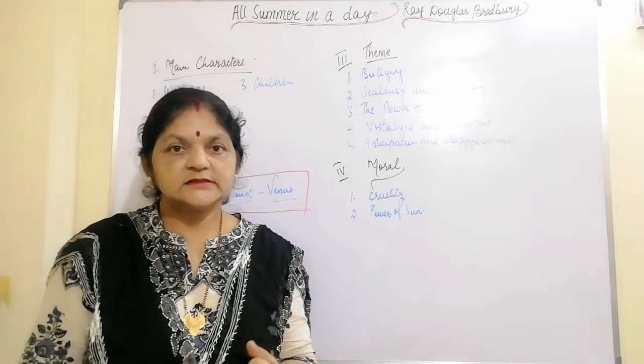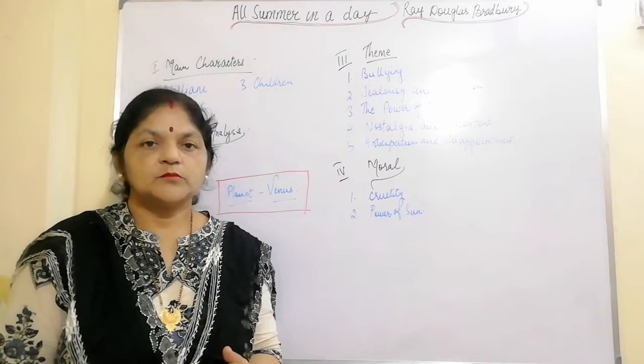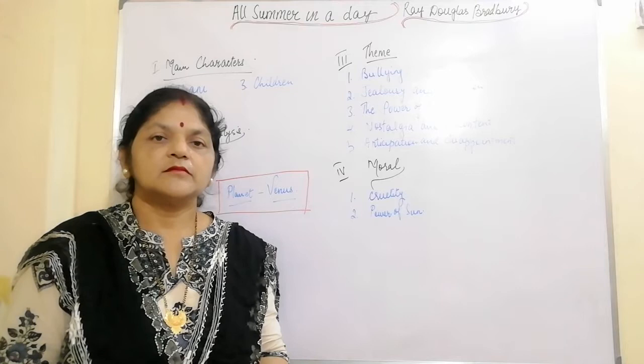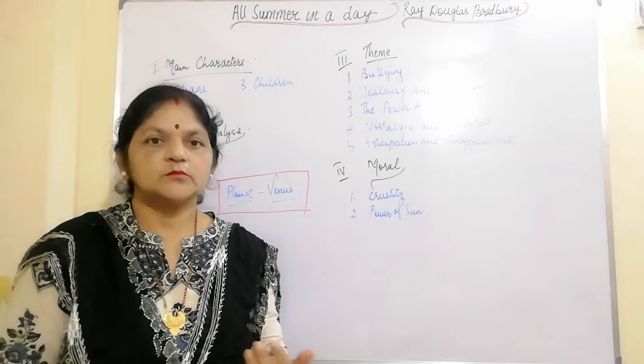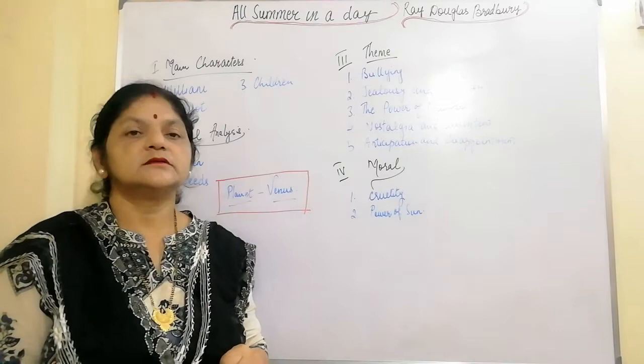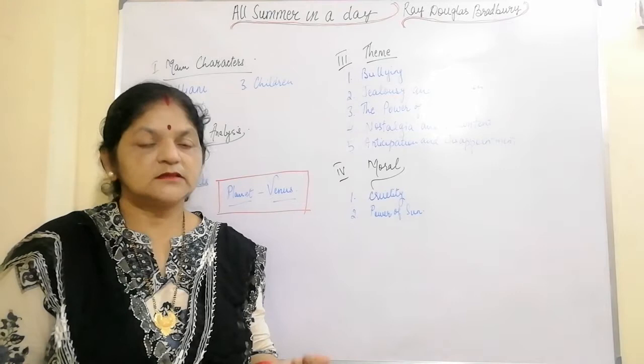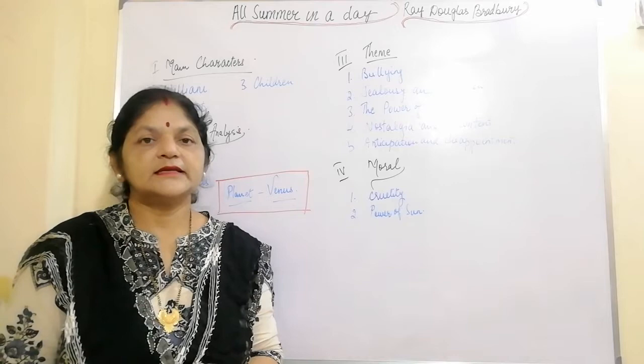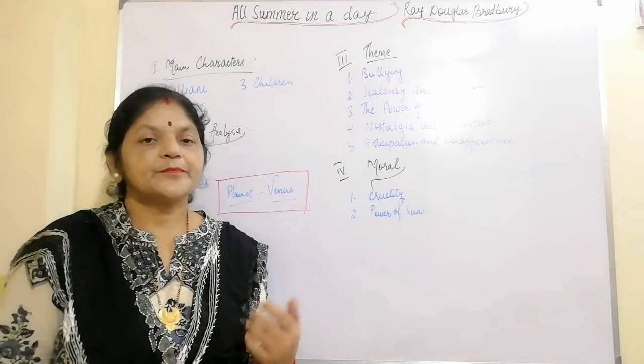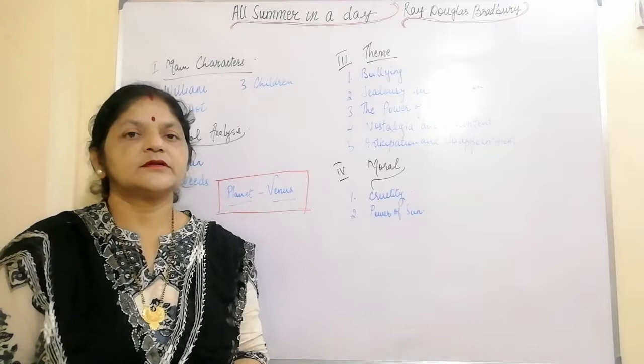When the story opens, a group of nine-year-old children are gathered excitedly by the window of their underground classroom. After seven long years, today is the day that scientists predict the sun will make its brief appearance. Indeed, the rain seems to be slowing. One child, Margaret, stands apart. Unlike most of the children, Margaret lived on Earth until she was four years old. Until five years ago, when children speculate about what the sun is like, Margaret can actually remember what the sun is like.